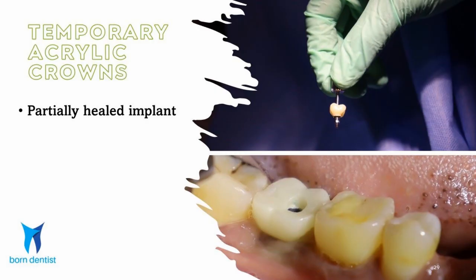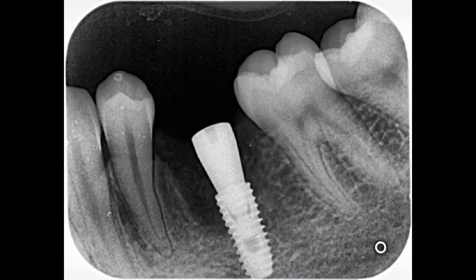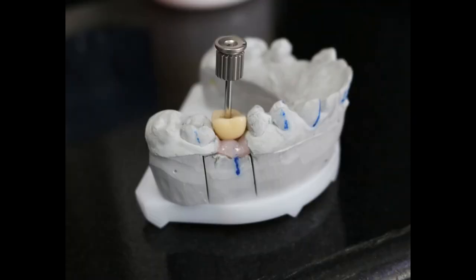There are many instances in which a definitive or permanent restoration is delayed. At those times, a temporary or intermediate crown, mostly made of acrylic, is given. These intermediate crowns need to be retrieved at a later stage at the time of permanent restoration, so a screw retained temporary is indicated. One such instance is when the implant is only partially integrated and you want to proceed with a restoration for functional or aesthetic needs. The best option is to give an acrylic temporary screw retained crown so that it can be easily retrieved after full integration of the implant.